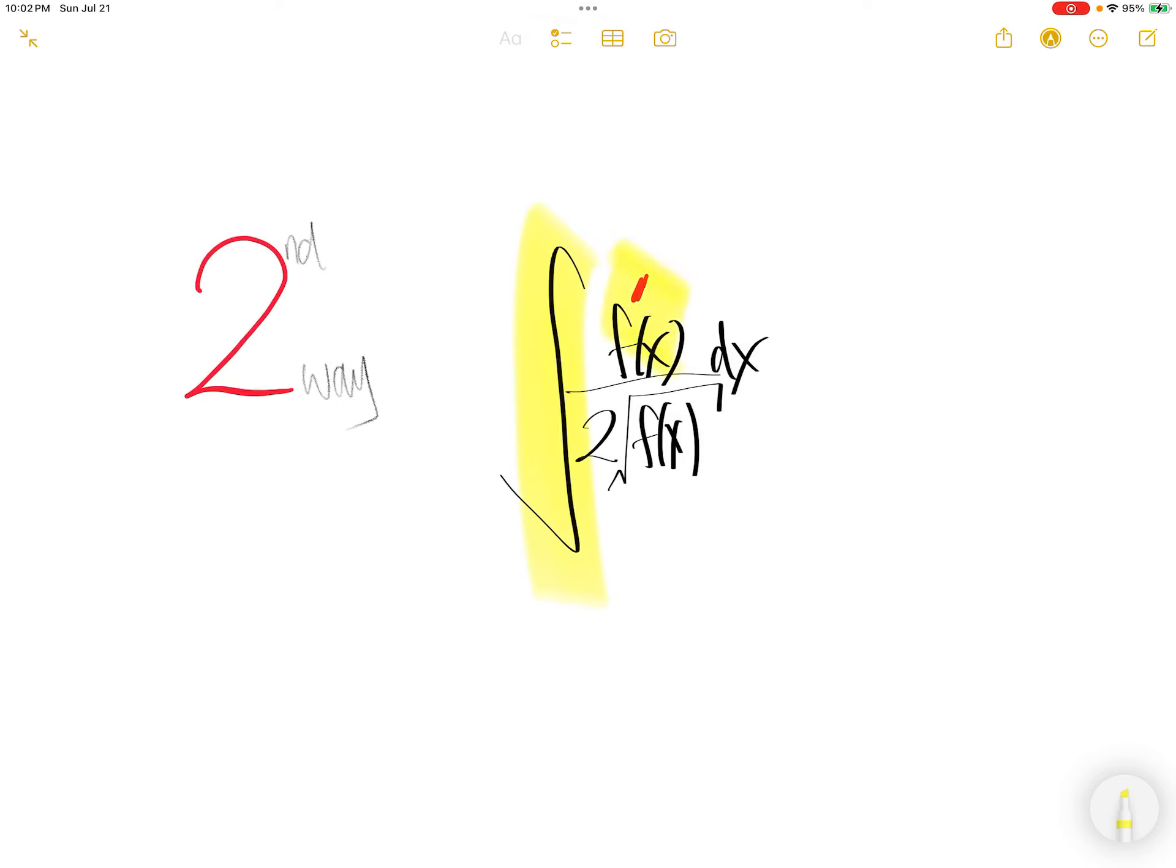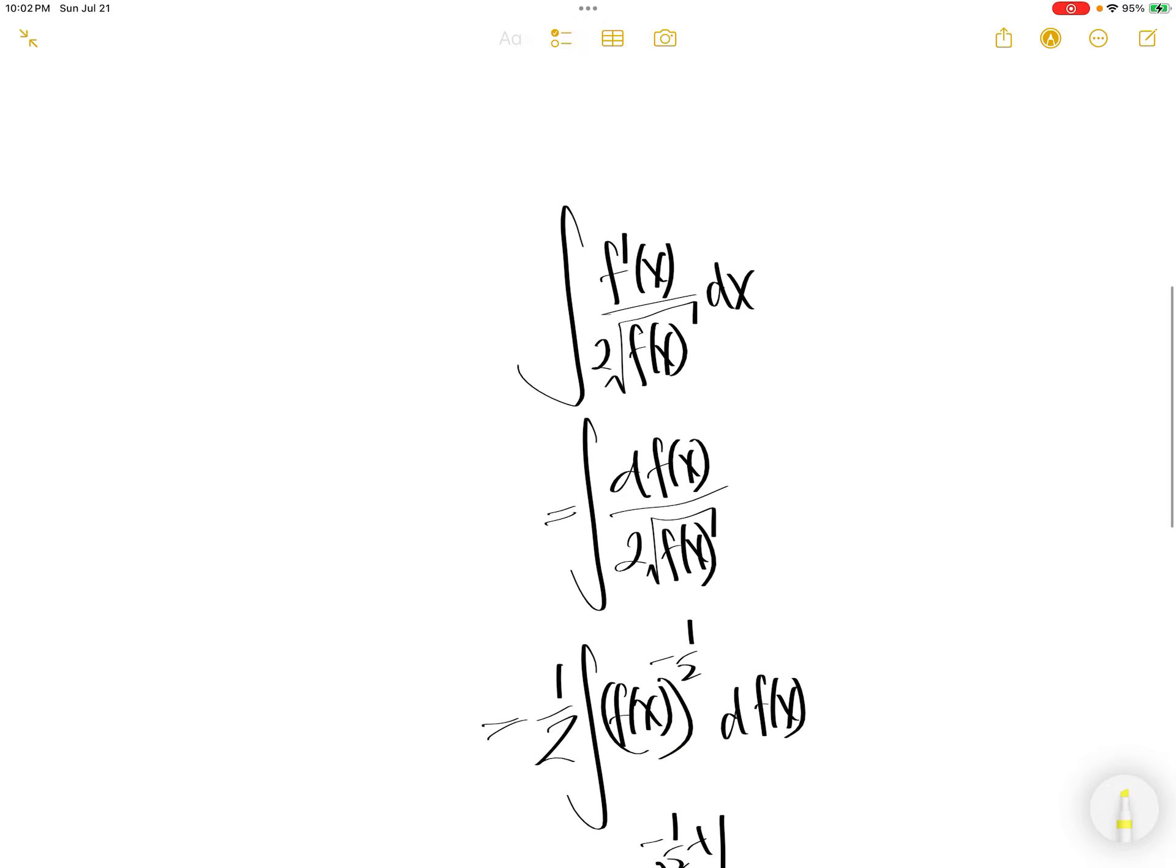Integral f prime of x divided by 2 times square root f of x. We're going to do this in a second way.